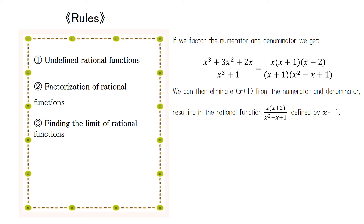Next, let's look at the factorization of rational functions. The numerator and denominator of the rational function f(x) both become zero when negative 1 is substituted for x. Therefore, if we factor both the numerator and denominator, we find that f(x) has a factor of (x + 1).